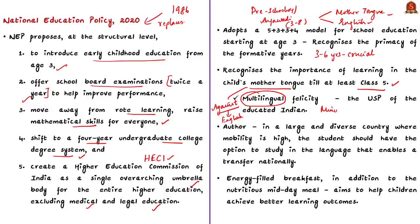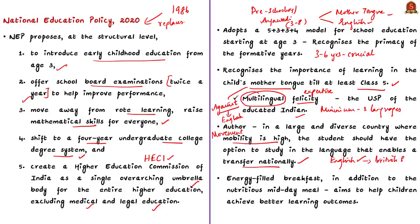At the school level, more than three languages can be learnt. As a result, multilingual expertise could become the unique selling proposition of an educated Indian in times to come. One editorial notes that in a large, diverse country with high mobility, the student should have the option to study a language enabling transfer within the nation — English performs this role due to historical factors relating to British rule. The choice of three languages will be that of states, regions, and students — no language is to be imposed on any student.